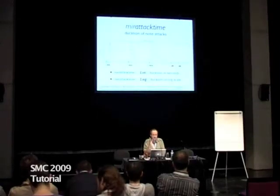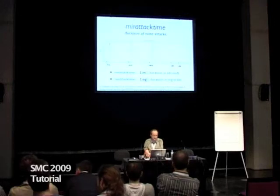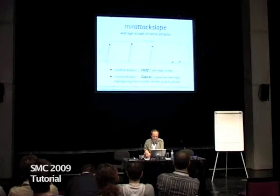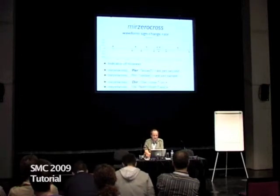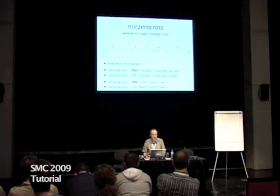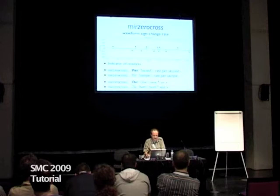Timbre. From the attacks that I showed previously, you can have an estimation of the attack time, duration of each attack, also attack slope, and also simply the zero crossing rate — so how many times the curve changes sign. It's an indicator of noisiness. If you look at the zero crossing rate from the waveform, you can have a rate per second, per sample, and so on.